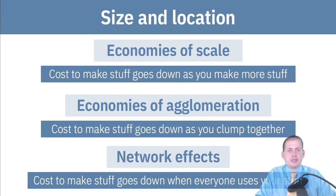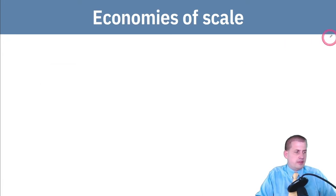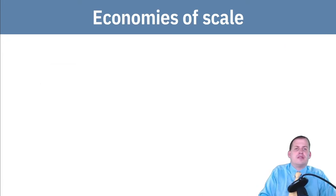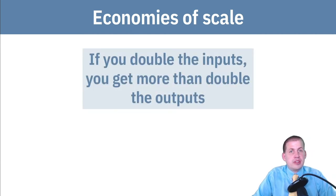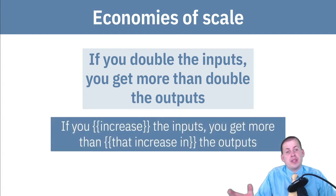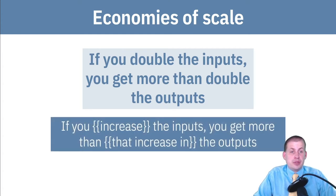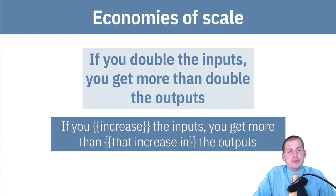Let's talk about economies of scale first, because this is the most popular, most famous version of this. Economies of scale just means that if you double the inputs, you get more than double the outputs. It doesn't always have to be double — if you increase the inputs, you get more than that increase in the outputs.